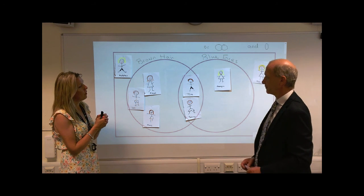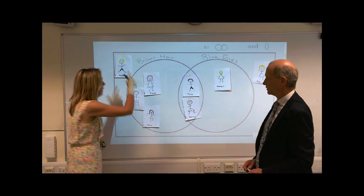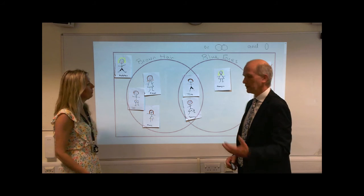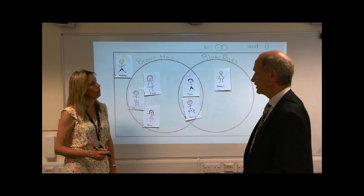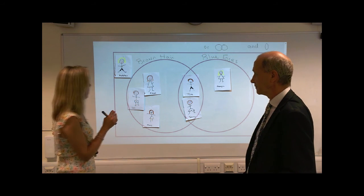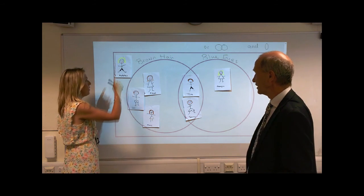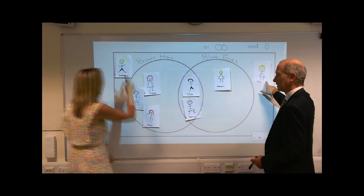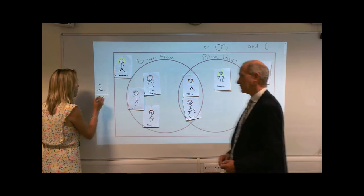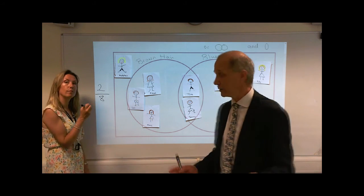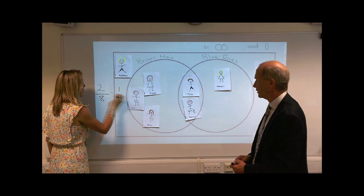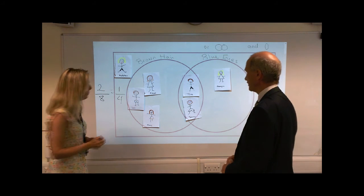How many have we got in total? In total we have to include the people outside the circles. So we've got one, two, three, four, five, six, seven, eight — eight people in total. So we could actually do some fractions. What fraction of our class don't have brown hair or blue eyes? Those are the two people outside the circles — two out of eight. We can write that as two eighths, but we could break it down to simplest form: one quarter.